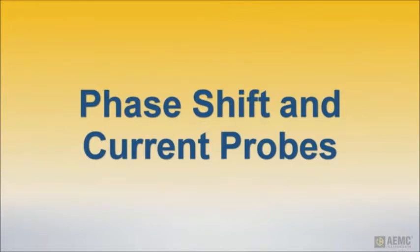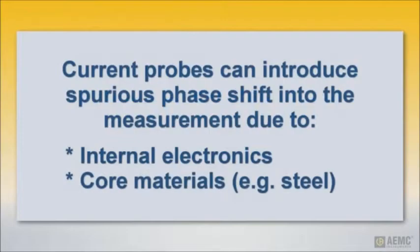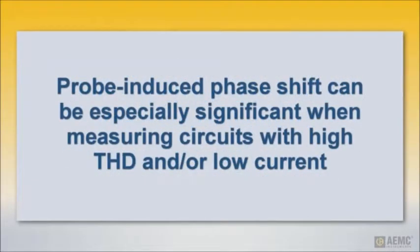Current probes used to connect the instrument to the circuit can introduce spurious phase shift into the measurement. Probe electronics and other internal components can produce inductive or capacitive measurement error for the circuit, affecting accuracy. Another contributing factor is the probe's core material, such as steel or other ferrous metal. This error can be especially significant in circuits with high THD, or when measuring low currents.